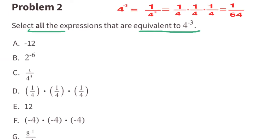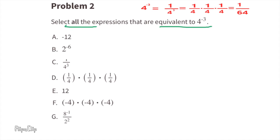Let's take a look at expression a. Expression a is negative 12, and since negative 12 is not equal to one over 64, I will not select expression a.